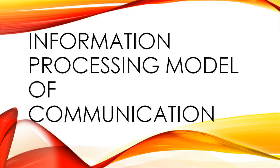Today we will talk about the information processing model of communication. The information processing model of communication is a model that explains the steps of a successful marketing campaign. A marketing campaign can be a TV advertisement, event marketing, personal selling, or website ads, banners, or billboards. The main goal of any marketing communication system is to convert the current brand knowledge of any brand to the desired brand knowledge of the marketers.